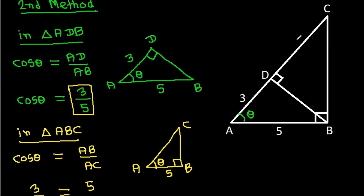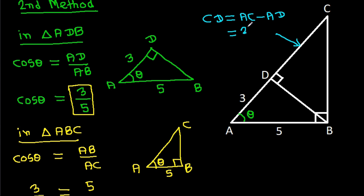CD equals AC minus AD: 25 by 3 minus 3, which equals 16 by 3.